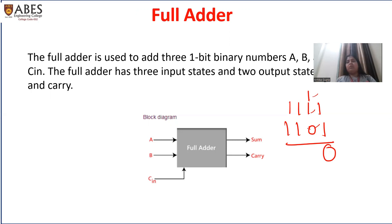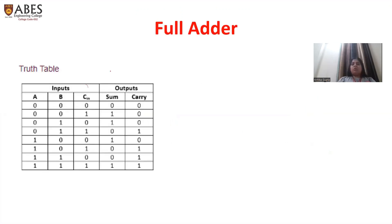Like in half adder, in full adder also there are two outputs: sum and carry. One plus one is zero; zero plus one is zero; and zero and one carry. Again, we need a full adder. That is why the full adder is used to add three one-bit binary numbers A, B and C. C is the previous carry. As I already discussed in my previous PLA lecture, for the designing of the circuit, we have to make the truth table. Here you know what is the truth table of the full adder - three inputs, so total there are eight combinations, and two outputs.